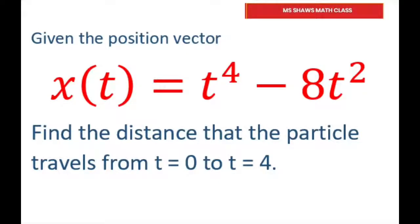So the first thing we're going to do is find the velocity. The velocity is just the derivative of our function, and that's going to equal 4t^3 - 16t.